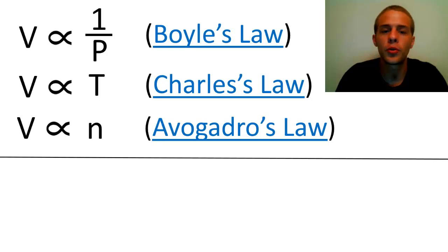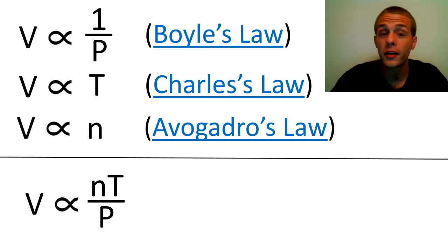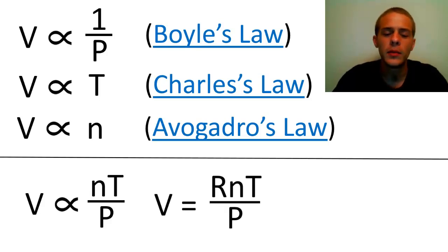We have all of these three proportionalities and we can combine these three proportionalities into one. And it looks sort of like this. We have the volume, which is directly proportional to the product of the amount in moles and the temperature divided by the pressure. And we can turn this proportionality into an equation as long as we incorporate a proportionality constant. And that proportionality constant is usually denoted as a capital R. So that means that V is equal to the product of the proportionality constant, the amount, and the temperature divided by the pressure.